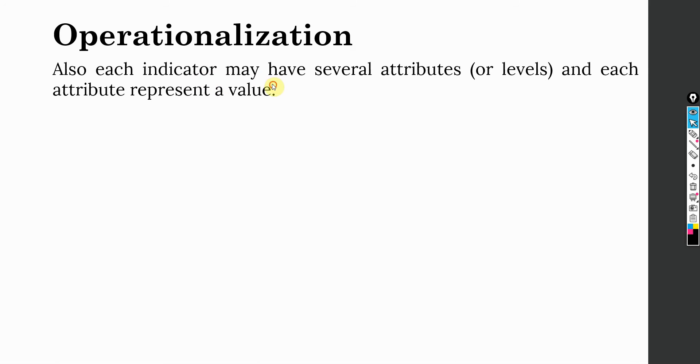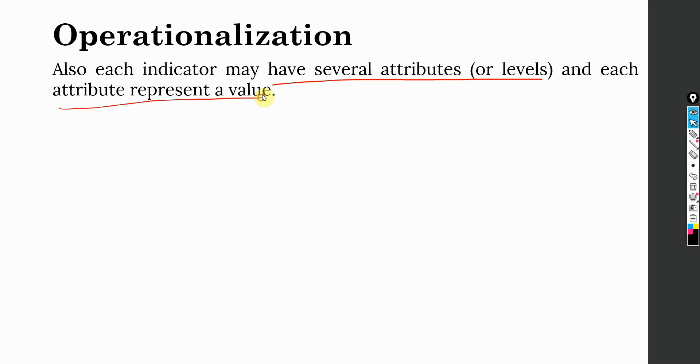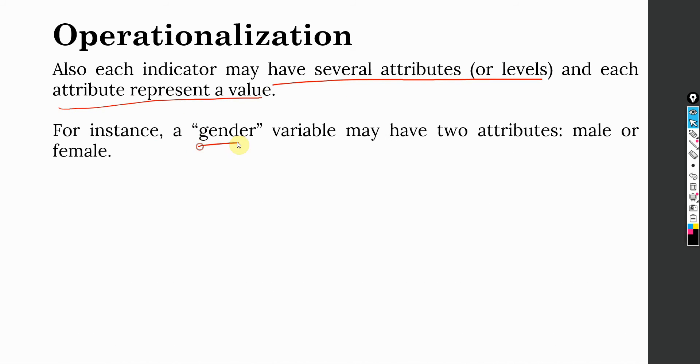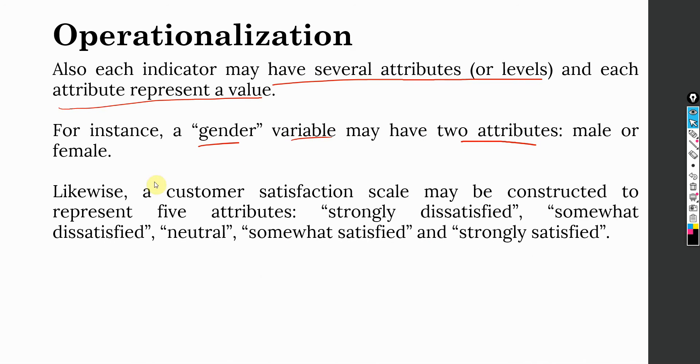Also, each indicator may have several attributes or levels and each attribute may represent a value. For instance, gender variable may have two attributes, male or female. Likewise, customer satisfaction scale may be constructed to represent five attributes: whether you are strongly dissatisfied, somewhat dissatisfied, neutral, somewhat satisfied or strongly satisfied. This is your response scale. You can have other response scales as well, just like you have heard about strongly disagree, disagree, neutral, agree and strongly agree.